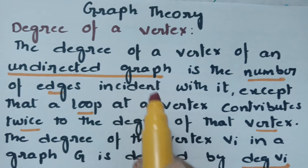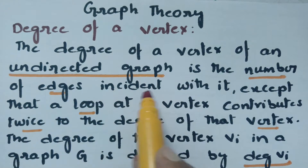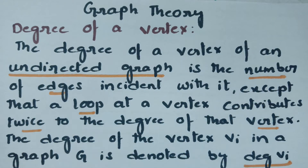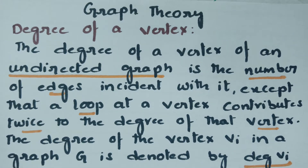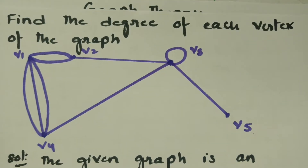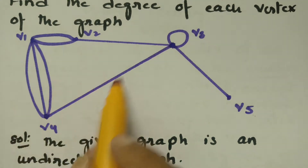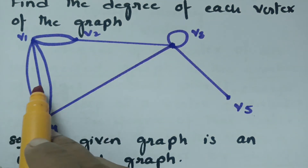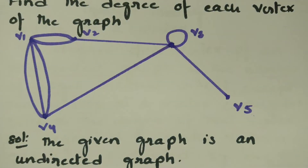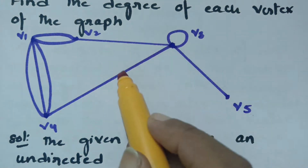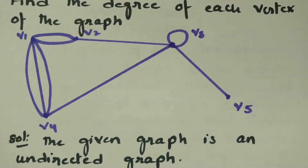The degree of a vertex of an undirected graph is the number of edges incident with it, except that a loop contributes twice to the degree of that vertex — if there is any loop, we consider it two times. This next example is a multigraph with parallel edges and a loop, which is nothing but a pseudograph. You can watch all these definitions in my previous video.